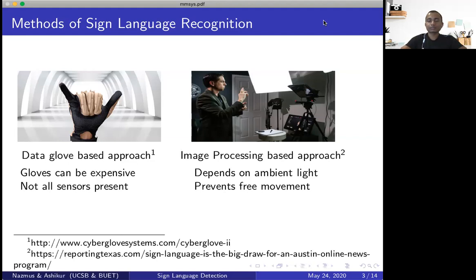The second primary method of sign language recognition is image processing based where a huge amount of image is collected and then some sort of machine learning models are used to detect a particular sign. The main problem with this approach is that the performance can depend on ambient light and it also prevents free movement on part of the user. The user always needs to be present within the view of the camera.